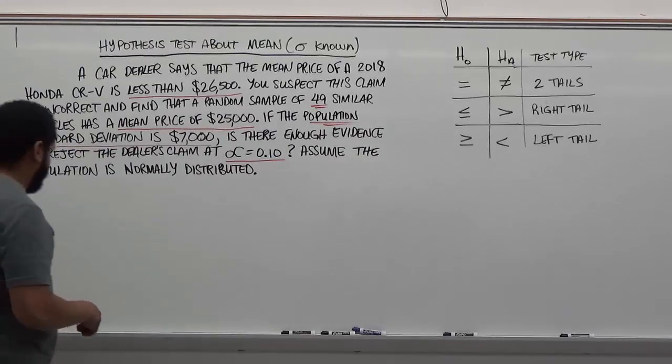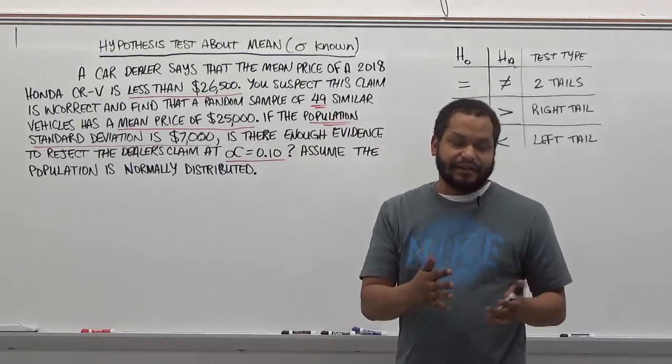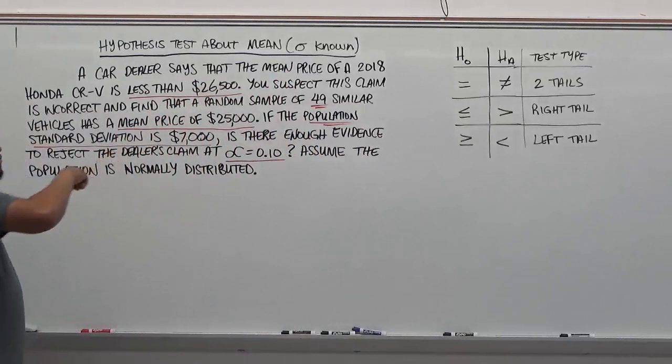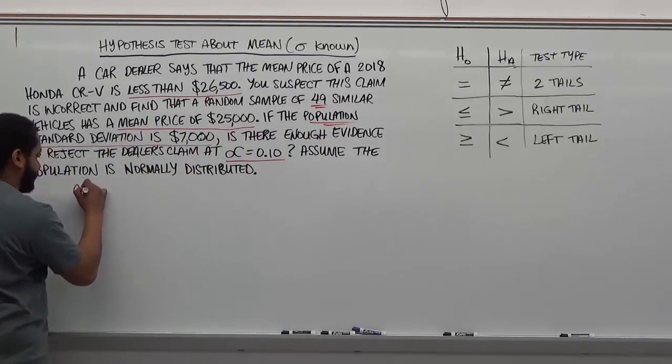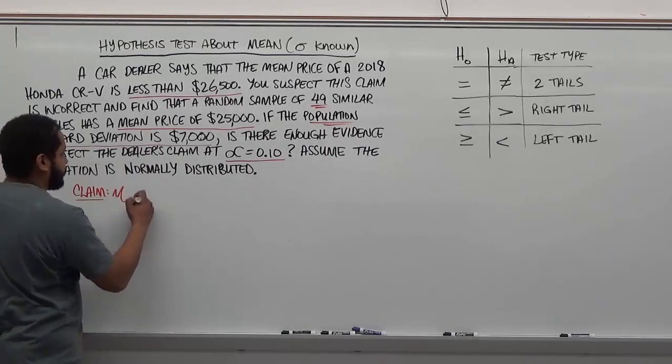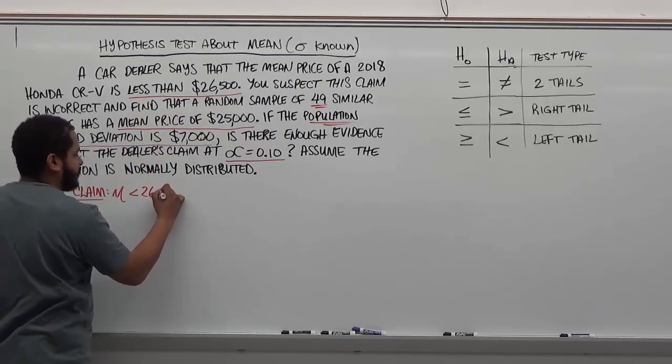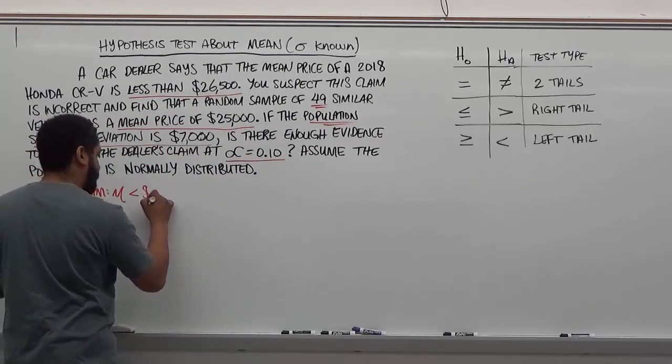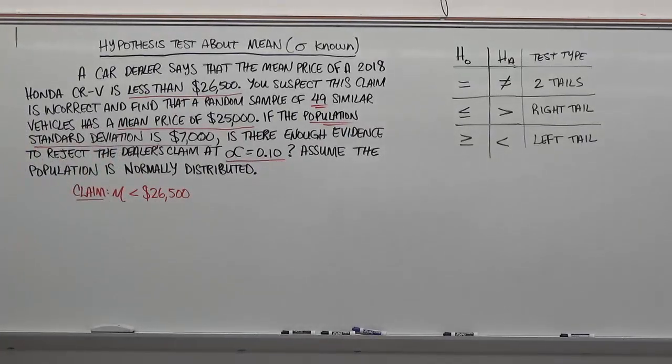To begin this, we have to take our claim and identify what it's saying so we can make a sentence out of it. Our claim is the dealer is saying that the CRV is less than $26,500. We're going to identify that claim right away and notarize it. The claim says the mean average price is less than $26,500.